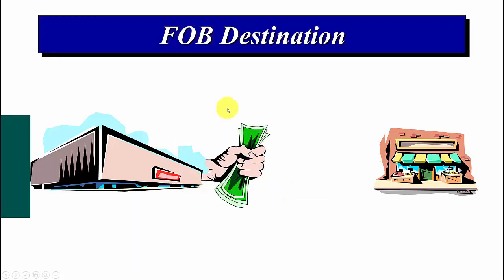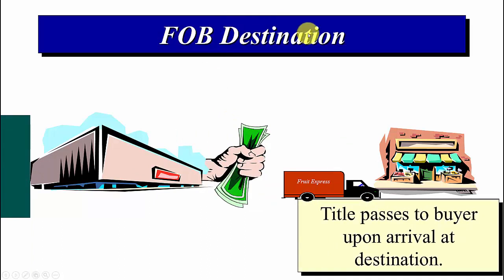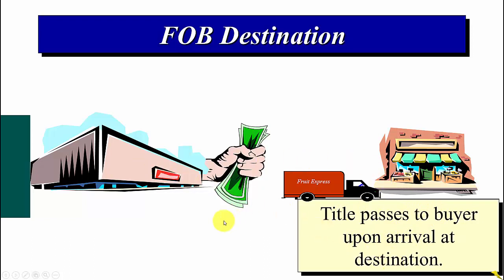FOB destination means that when the goods are traveling, title does not pass until they reach the dock of the customer — title passes to the buyer upon arrival at the destination. So there are two kinds: FOB shipping point and FOB destination, and it determines when the goods change hands or when title passes.